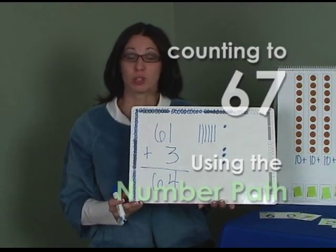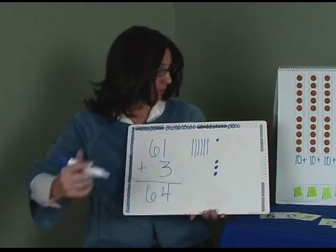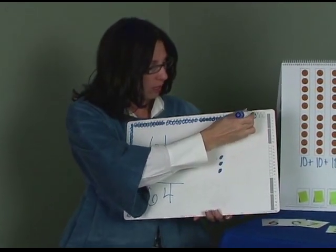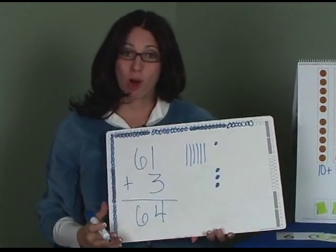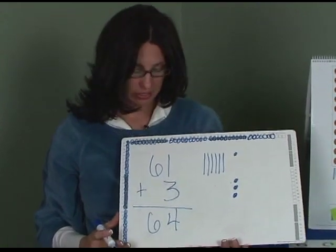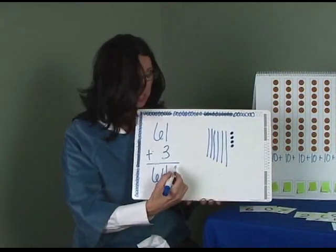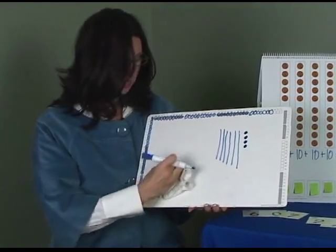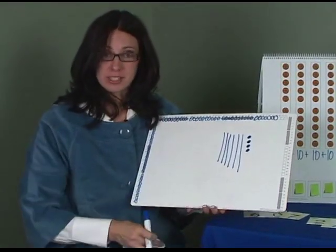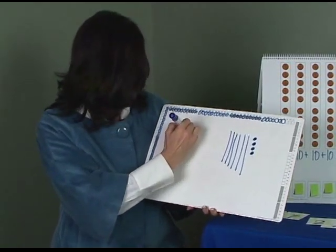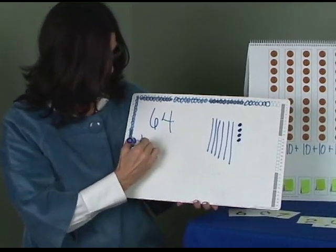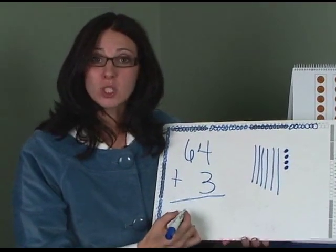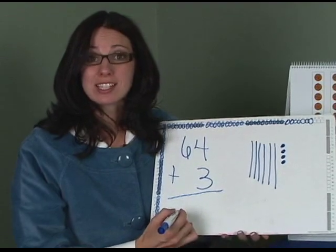Using our number path we are going to add 3 more: 1, 2, 3. That now also makes 67. Now we need to check our equation. Our equation is 64 plus 3 equals 67.